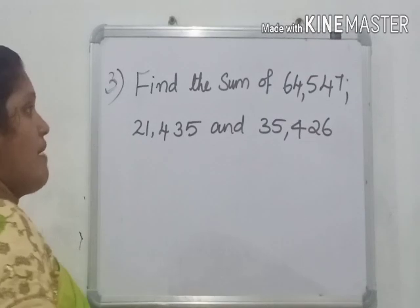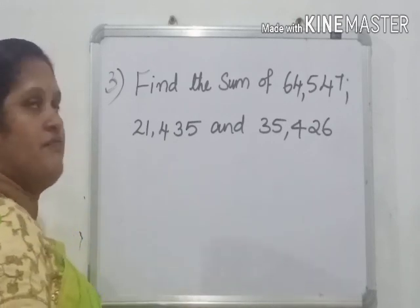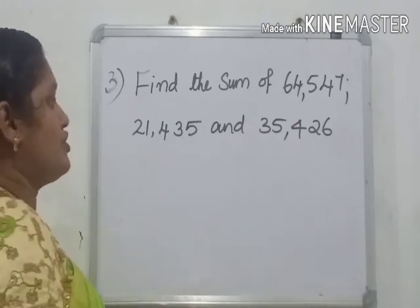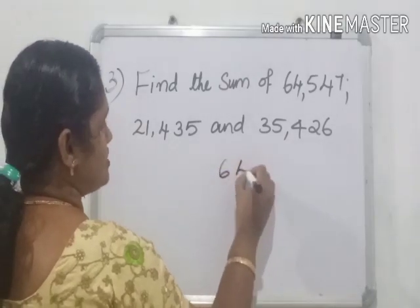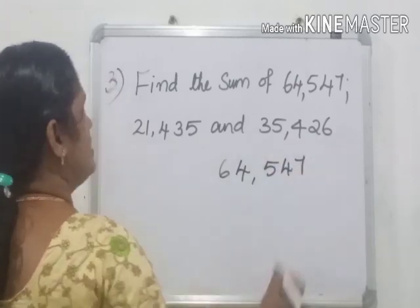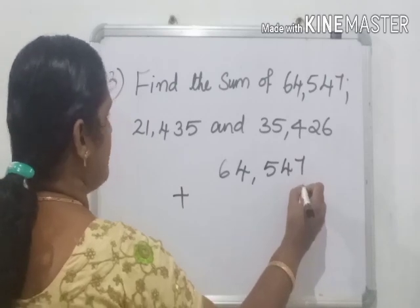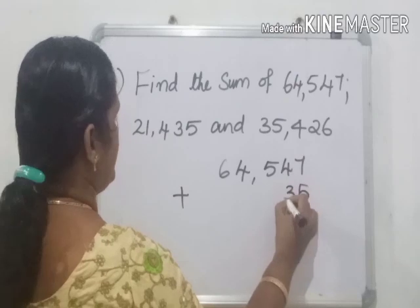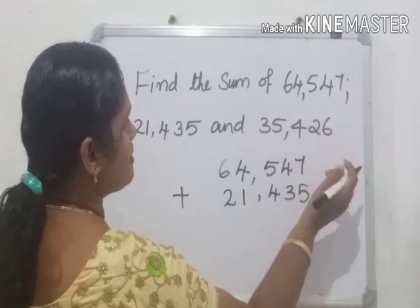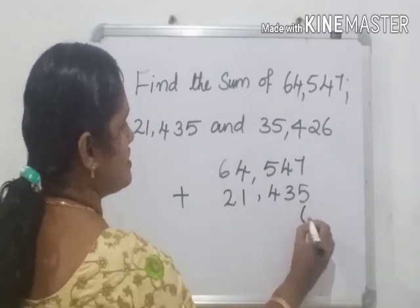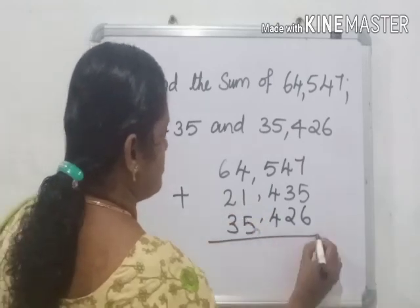Example 3: Find the sum of 64,547, 21,435, and 35,426. Here we have 3 numbers. To add these 3 numbers, we have to arrange the numbers vertically. We will write 64,547 plus here we have 21,000. So arrange the numbers like this according to the place value chart: 5, next 3, 4, 1, 2. Then next number 35,426, in units place 6, tens place 2, hundreds place 4, then 5, 3. Clear?